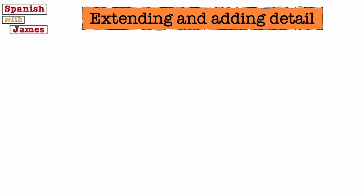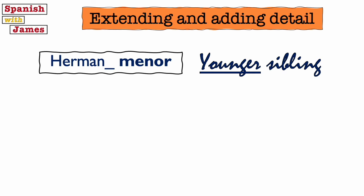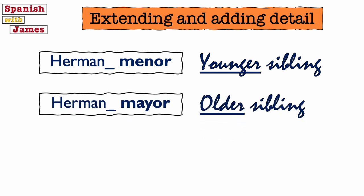The final thing I'm going to teach you to give even more detail in your speaking and writing is how to say younger and older. For a younger sibling use the adjective menor, for an older sibling use mayor. Because menor and mayor are adjectives they go after the noun in Spanish — so younger brother is hermano menor, younger sister hermana menor, a younger non-binary sibling hermane menor. They end in consonants so we don't need to worry about changing the O or A ending.